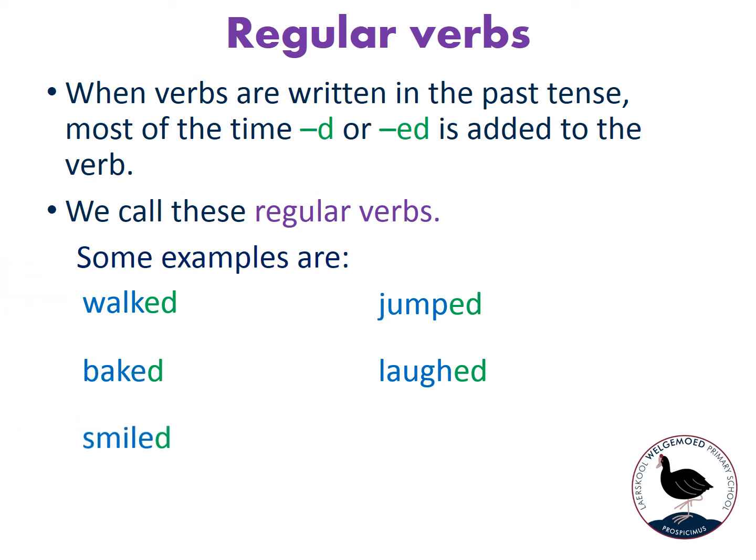The same with 'smiled' — we just add a 'D' as it already contains an 'E'. And our last example: 'chased' — also contains an 'E' so we just add a 'D'. So all these verbs are regular verbs because we only had to add a 'D' or an 'ED' to change them to the past tense.